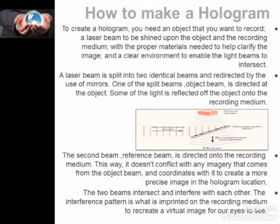Now we will get to the question of how to make a hologram. To create a hologram you need an object that you want to record, a laser beam to be shined upon the object, and a recording medium. With the proper materials needed to help clarify the image, a clear environment is required to enable the laser beams to intersect.